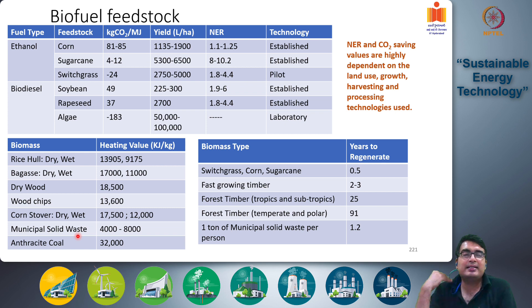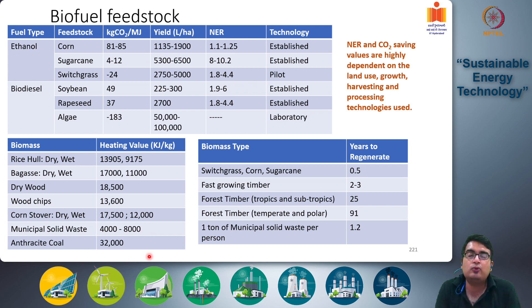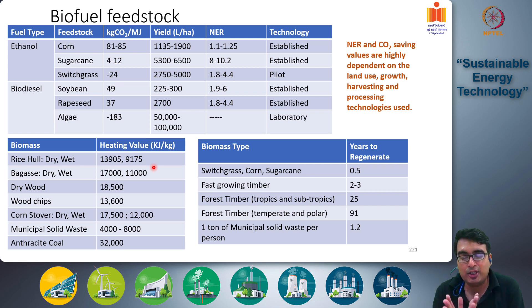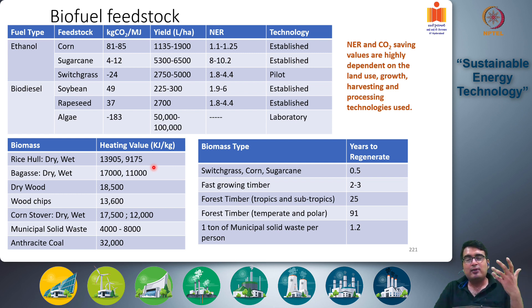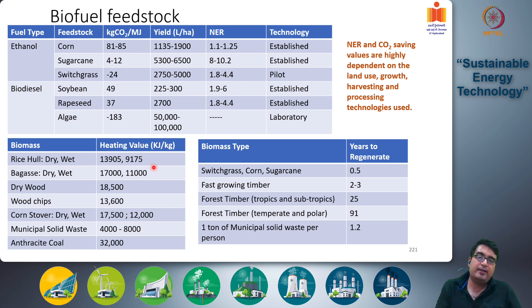Municipal solid waste — the waste collected by municipalities from households — has a much lower heating value of 4,000 to 8,000 kilojoules per kg. Compared to anthracite coal at 32,000 kilojoules per kg, biomass materials have much lower specific energy content per unit mass. When trying to replace coal with solid biomass like wood pellets, you need to add more biomass material than coal to generate the same amount of energy.